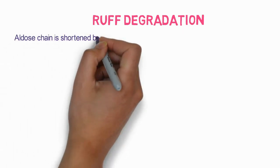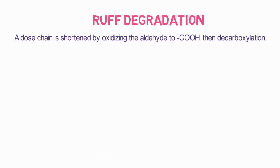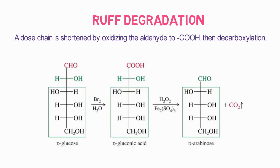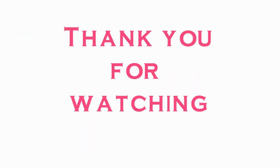The rest of the molecule is unaffected. The next important reaction is the Ruff degradation reaction. In this, the aldose chain is shortened by oxidizing the aldehyde to a carboxylic acid followed by decarboxylation. Glucose, in the presence of bromine water, is oxidized to gluconic acid, then in the presence of iron sulfate and hydrogen peroxide, carbon dioxide is lost, yielding arabinose. This reaction is used for shortening a six-carbon chain to a five-carbon chain.